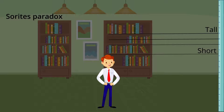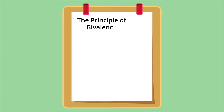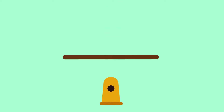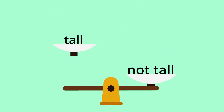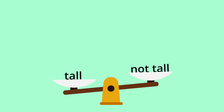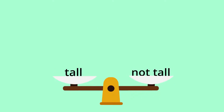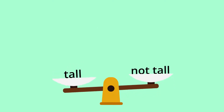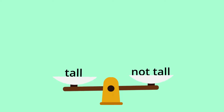This would mean the principle of bivalence is wrong — 'you are tall' is not either true or false. Preserving the principle would require defining the cutoff points between tall and not tall, but many find this solution unappealing because it goes against our intuition in the case of the Sorites paradox.